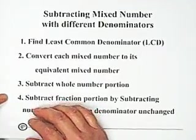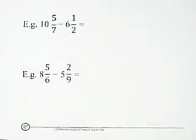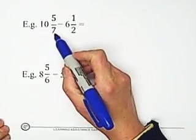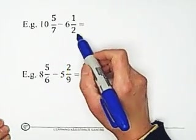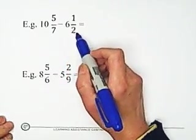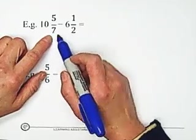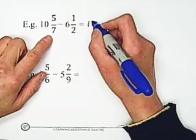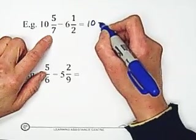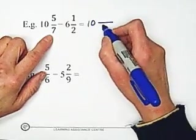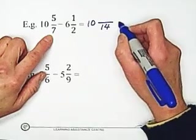Here I have two examples to show you. The first example, 10 and 5 over 7 minus 6 and 1 over 2. The denominators are 7 and 2. To find the least common denominator, because 7 and 2 don't have common factors, we multiply. So the least common denominator is 14, just multiply these two numbers.